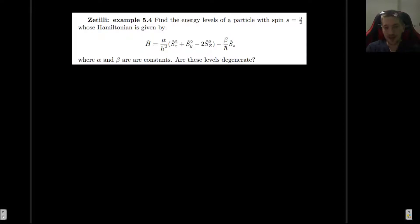Now we can begin doing a few examples solving some problems that involve spin. In this first one, which I took from Settile's book of Introduction to Quantum Mechanics, example 5.4, we are asked to find the energy levels of a particle with spin s equals 3/2 whose Hamiltonian is given by that Hamiltonian right there, where alpha and beta are constants. And another question is whether these levels are degenerate.